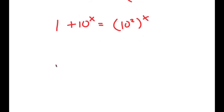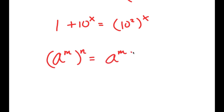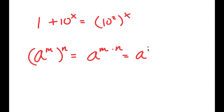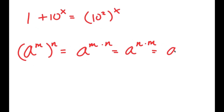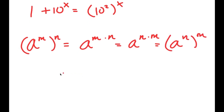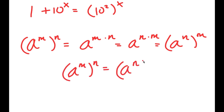Now from here, if I have something in the form a to the power of m to the power of n, this is equal to a to the power of m times n. And a to the power of m times n is the same as a to the power of n times m. So in simpler terms, a to the power of m to the power of n is equal to a to the power of n to the power of m.